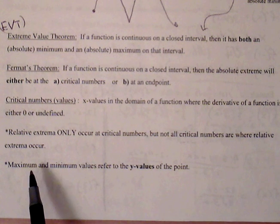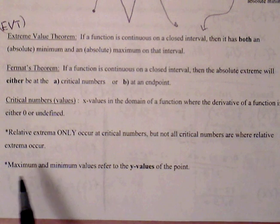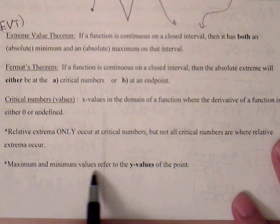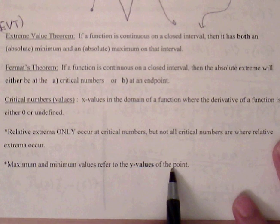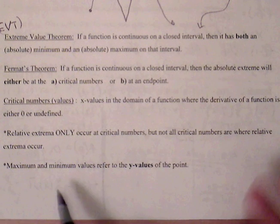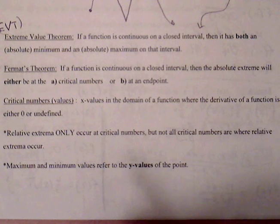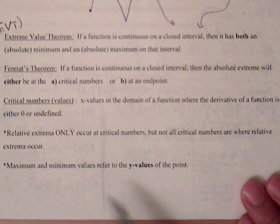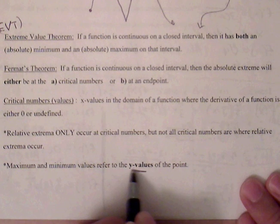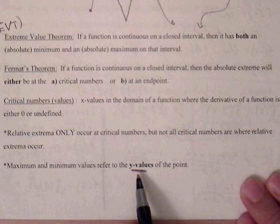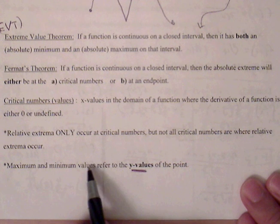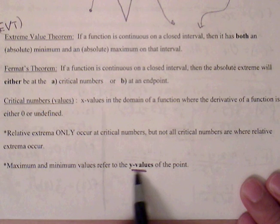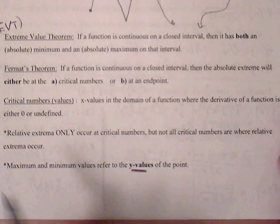Something to be aware of is that maximum and minimum values refer to the y-values of the point. So if the problem is asking for the maximum value of the graph, it's asking for the y-value. If you see minimum value or maximum value, it is implied that they're talking about the y-value at that point.